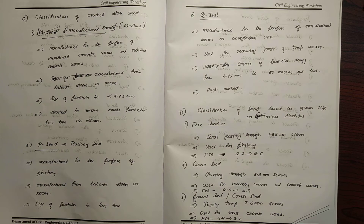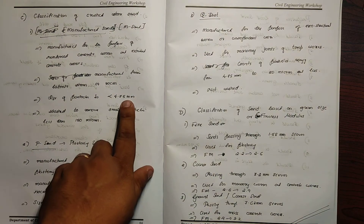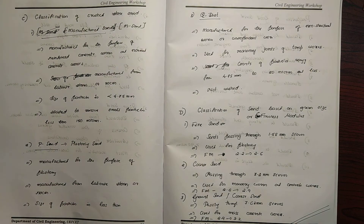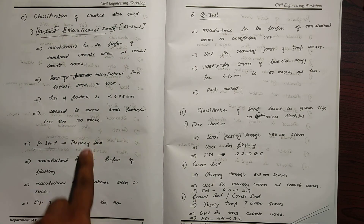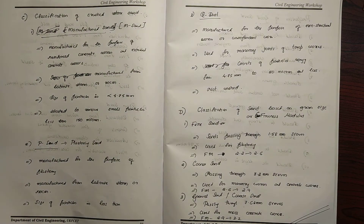M-sand is manufactured from lateral stones or rocks. We have to remove the rocks from the top. The size of particles is less than 4.75mm. It is processed using a double wash machine, using the clay particles. After 4.75mm, the size goes down to 150 micron.